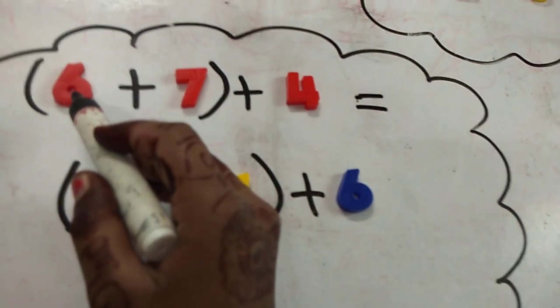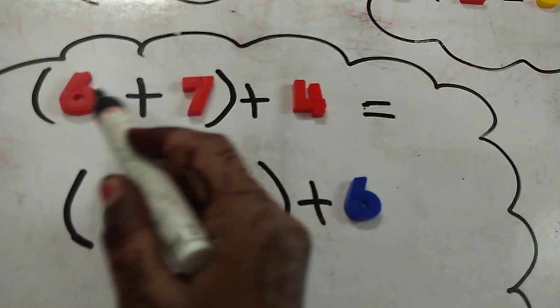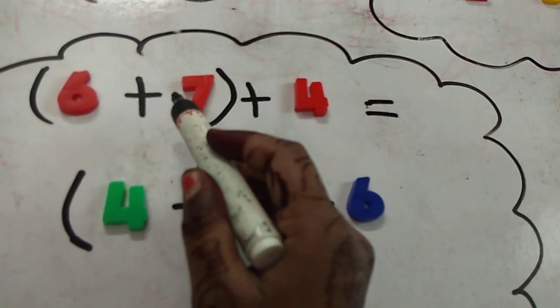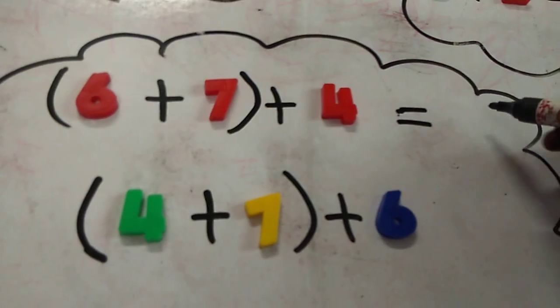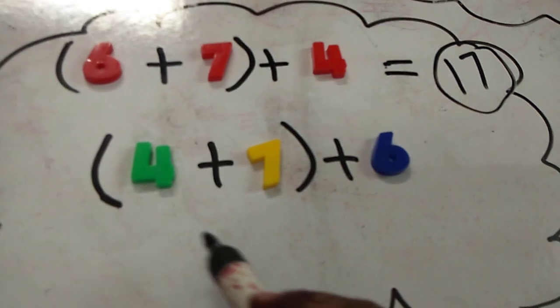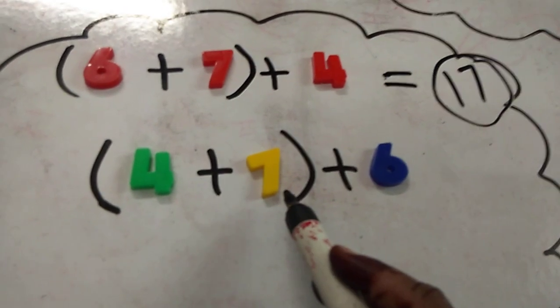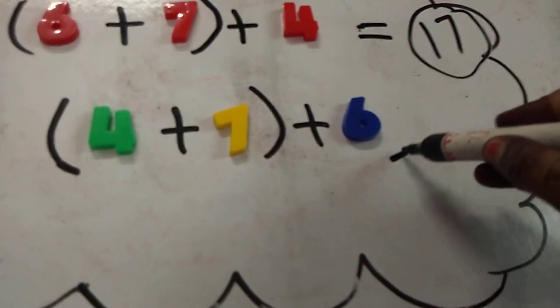Means 6 plus 7 will be 13, plus 4 will be 17. Similarly, 4 plus 7 will be 11, and 11 plus 6 will give us 17.